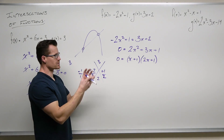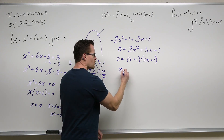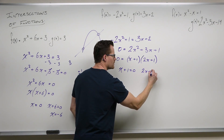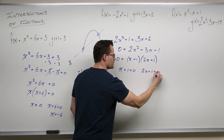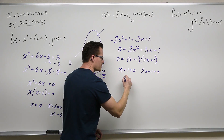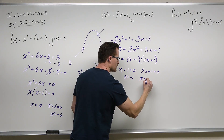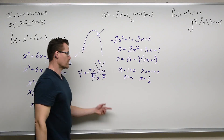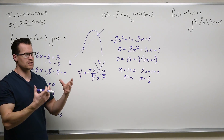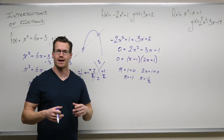By the zero product property, we can set these equal to zero. We'll subtract 1, subtract 1 and divide by 2. We'll notice that this is the value 1 — if I change the sign, that's negative 1. Here's 1 half — change the sign, that's negative 1 half.